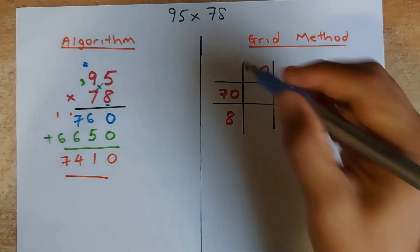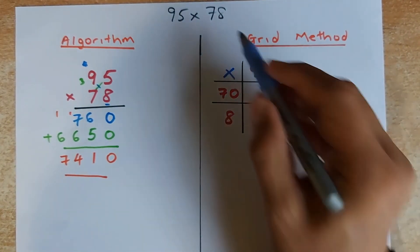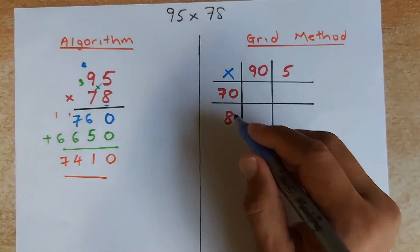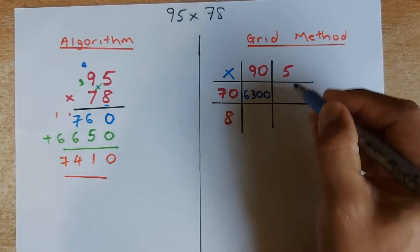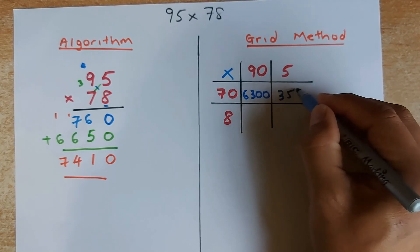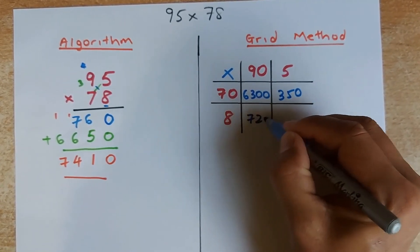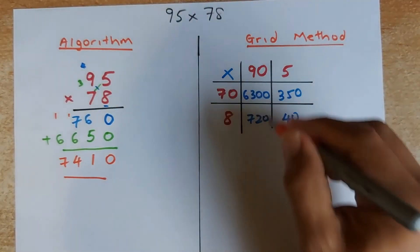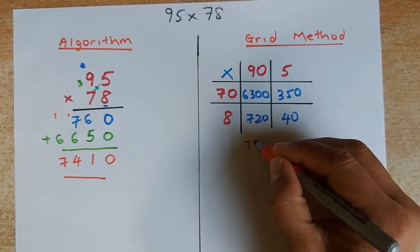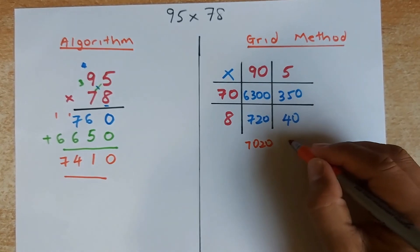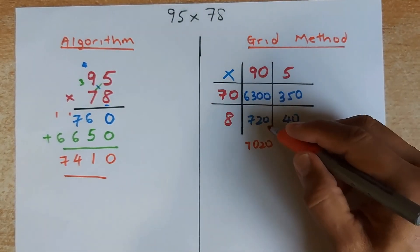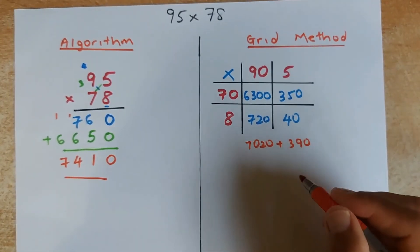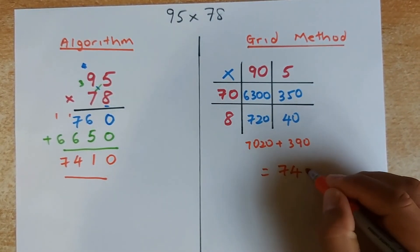And again, we are doing the grid method. So 95 is made up of 90 plus 5, and 78 is 70 plus 8. We do the grid method and multiply them. 90 times 70 is going to be 6,300. 5 times 70 is going to be 350. 90 times 8 is 720. And 5 times 8 is going to be 40. Then we add: 6,300 plus 720 is 7,020. And 350 plus 40 is 390. If you add those two numbers together, you should get 7,410.